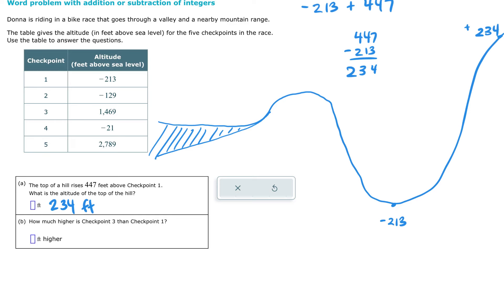If I were to continue my drawing over here, this is a hill. Well, if farther to the right there was a mountain, that would be where checkpoint three is, 1,469 feet above sea level. I'm just going to draw this on a number line. Here is checkpoint three at 1,469 feet. Here is sea level, which is zero. Here is checkpoint one, which is negative 213.